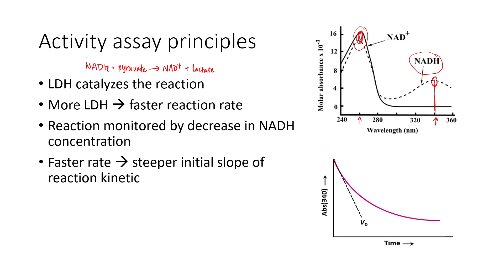When we look at absorbance at 340 nanometers over time, we get our activity assay graph where the y-axis is absorbance at 340 and the x-axis is time. What we're really interested in measuring is the initial rate of the reaction, which tells us how much NADH we're consuming at the very beginning when all of our LDH is active. In an ideal world we'd see a straight line, but in real life we see a gentle curve where the reaction goes faster at the beginning and then slows as substrate is used up. It's really important to measure that initial velocity towards the beginning of the reaction.